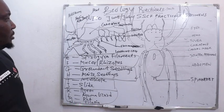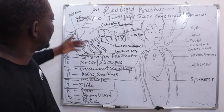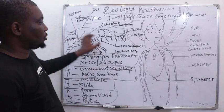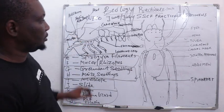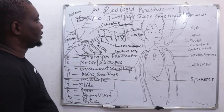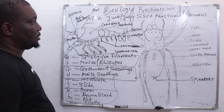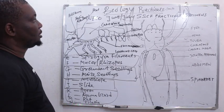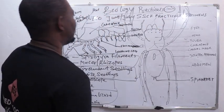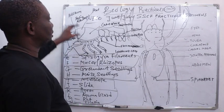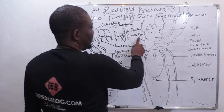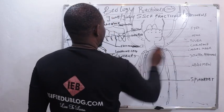Looking at the two specimens: this one belongs to crustacean and this one belongs to Arachnida. Now look critically and find the structural differences. Here there is a palp, whereas here there is an absence of palp. There is presence of telson in one specimen and it is absent in the other.